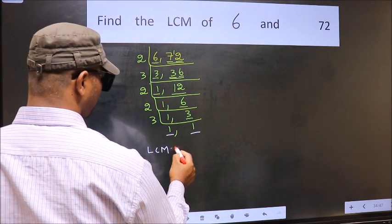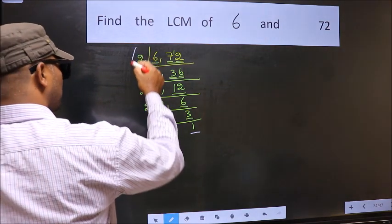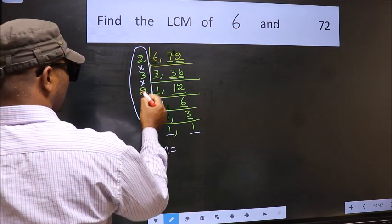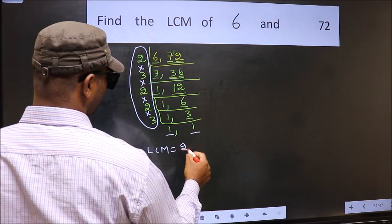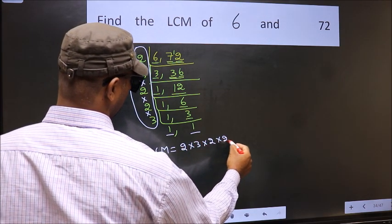So our LCM is the product of these numbers. That is 2 × 3 × 3 × 2 × 2 × 3.